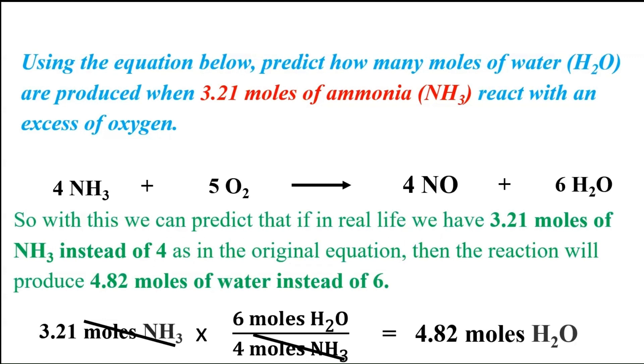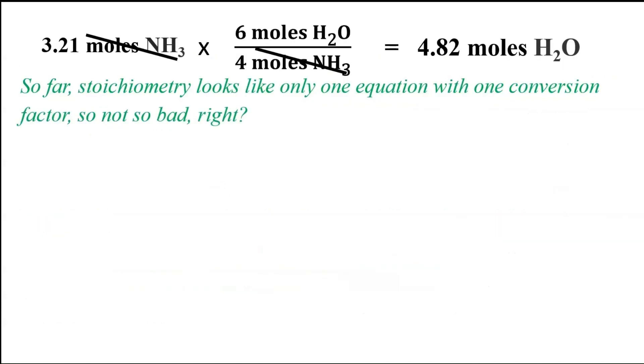So this means basically that in real life, if we reacted 3.21 moles of NH3 instead of 4, then the reaction is going to generate 4.82 moles of water instead of 6. And again, it's just like altering a recipe for a different number of people showing up at your house.